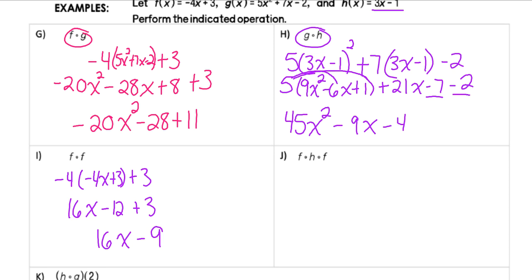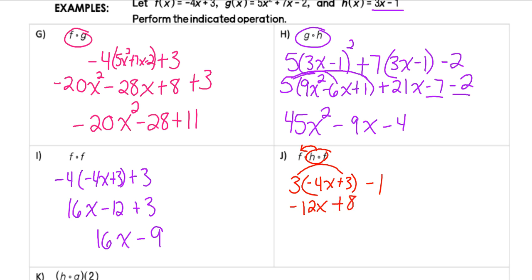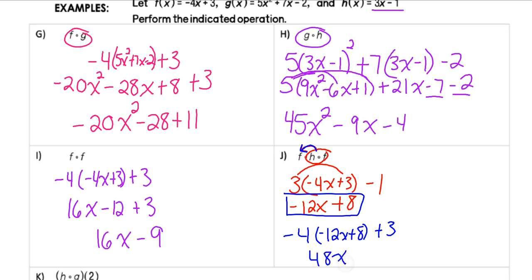For this next one, we have three functions composed together. I'll do the inner two first: h(f(x)). Into h, I replace x with f = (−4x + 3): 3(−4x + 3) − 1. Distributing gives −12x + 9 − 1 = −12x + 8. Now I plug that result into f: −4(−12x + 8) + 3. Distributing gives 48x − 32 + 3 = 48x − 29. It's just a multi-step problem when you have three functions composed together.